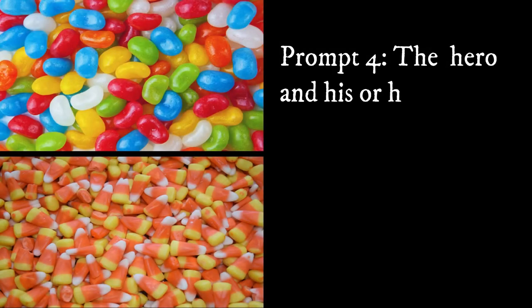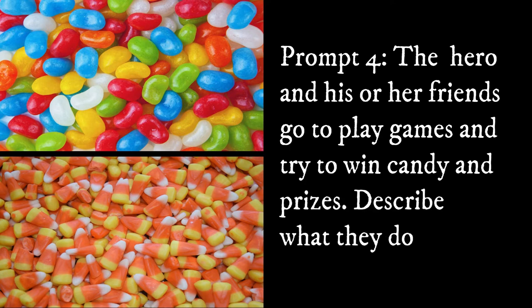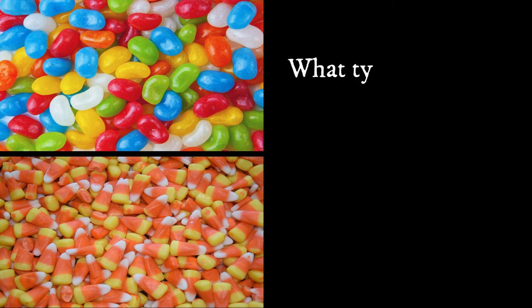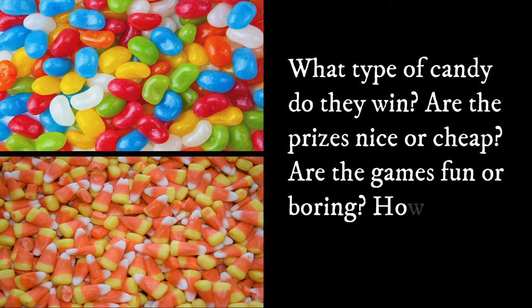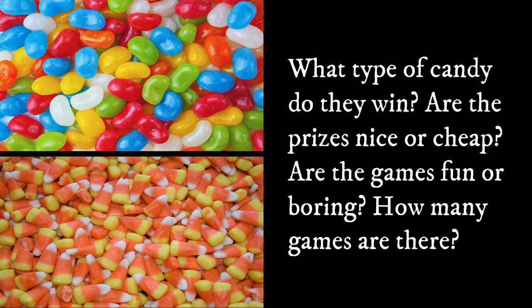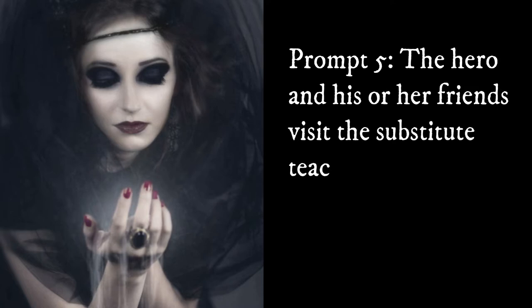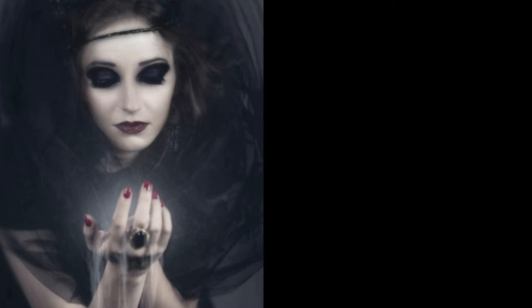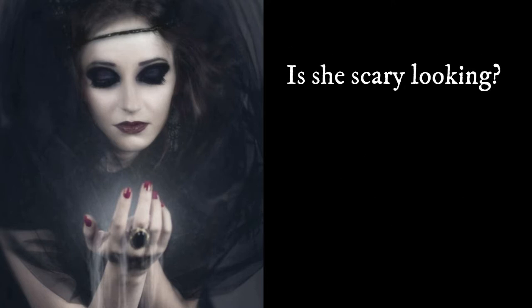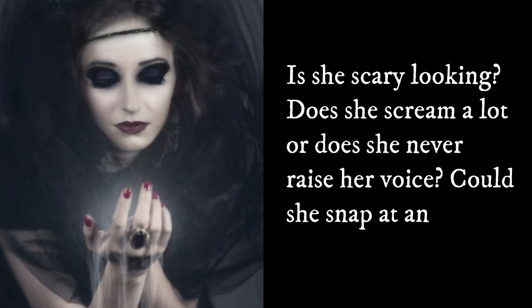Prompt 4: The hero and his or her friends go to play games and try to win candy and prizes. Describe what they do together. What type of candy do they win? Are the prizes nice or cheap? Are the games fun or boring? How many games are there? Prompt 5: The hero and his or her friends visit the substitute teacher's room. Describe why they are scared of her. Is she scary looking? Does she scream a lot or does she never raise her voice? Could she snap at any moment?